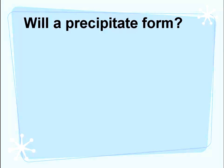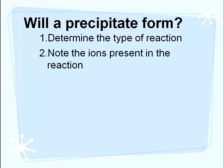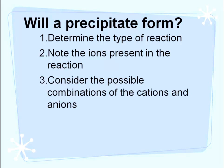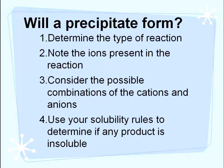So will a precipitate form? When predicting products, can we determine if anything on the product side will be a solid? To do this, first determine the reaction type — single replacement or double replacement. Note the ions present in the reactants, such as potassium or nitrate. Consider how the ions in the reactant side will rearrange to form your products — what combination of cations and anions will be produced. Then use your solubility rules to determine if any product is insoluble.